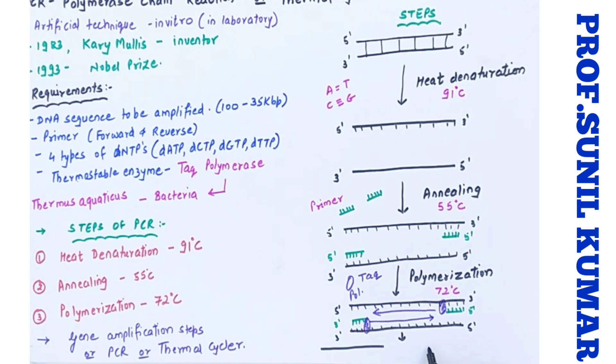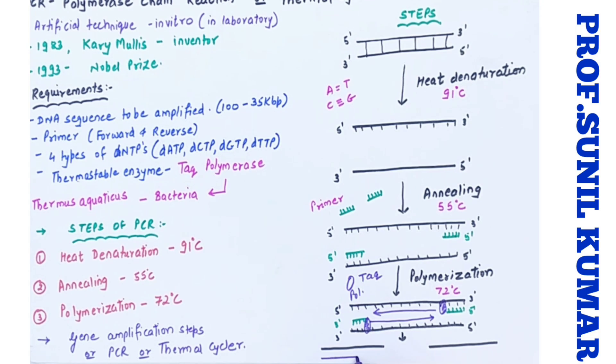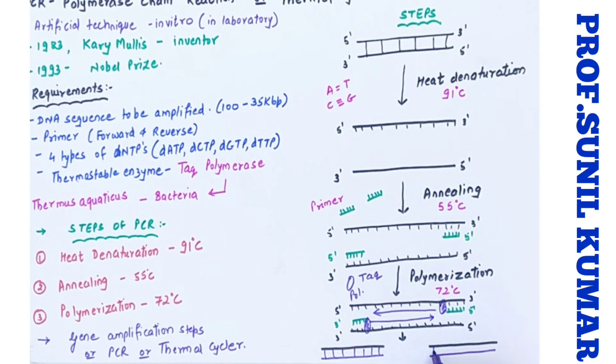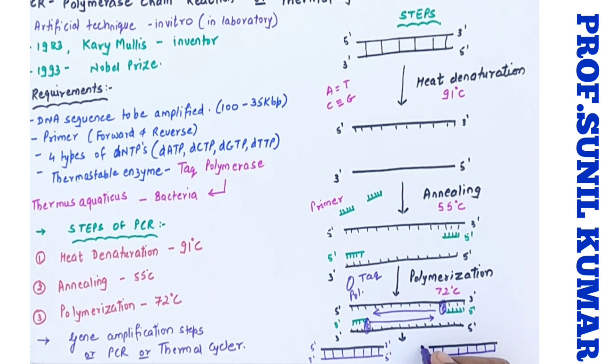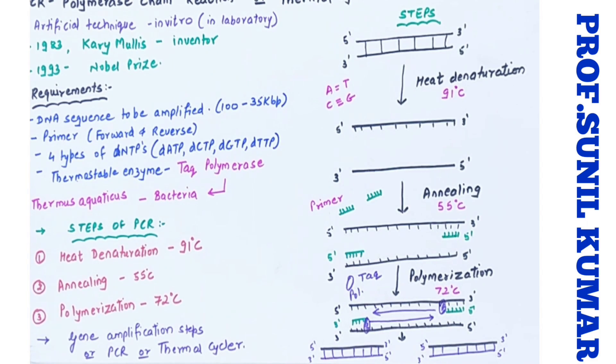And this results in formation of two new DNAs. And once two DNAs are formed, it is completion of one cycle. So this is two DNA synthesized from one DNA by the help of PCR machine. So you just have to remember three steps: HAP - heat denaturation, annealing, and polymerization for PCR technique.